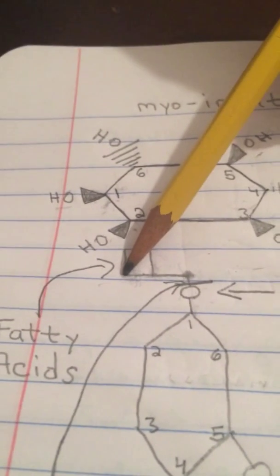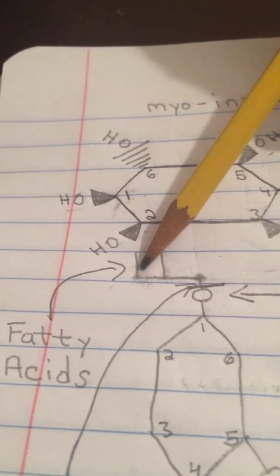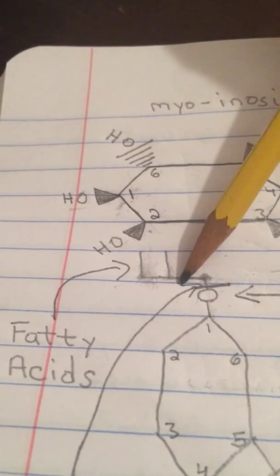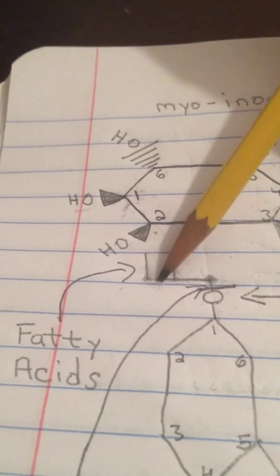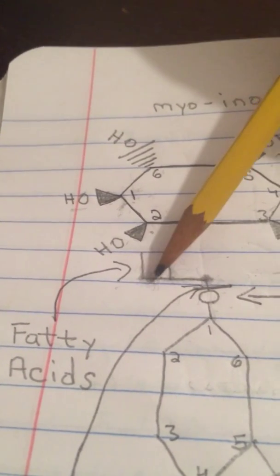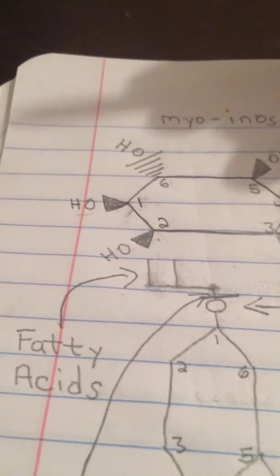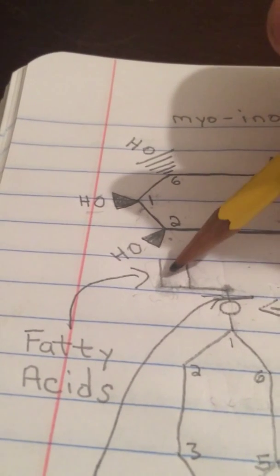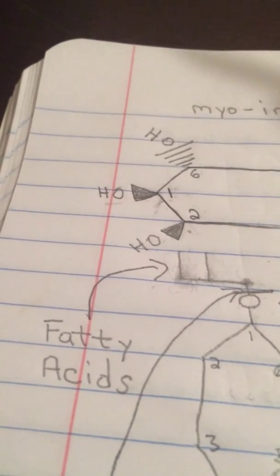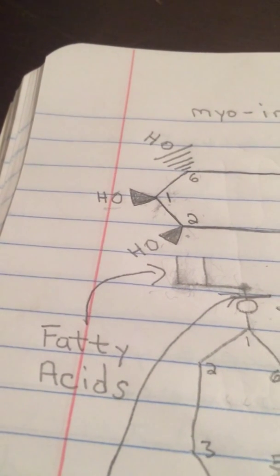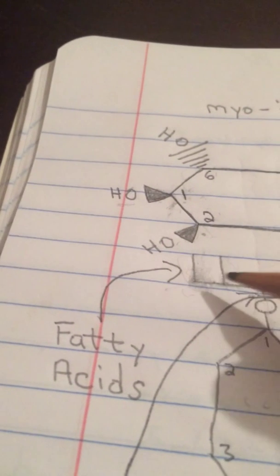Down here we have what would be like the phospholipid bilayer, and this right here would be your fatty acids, or long-chain carboxylic acids. They're not actually carboxylic acids once they bind to the glycerol molecule — they become acetyl groups, because they lose their alcohol group and are left with a carbon double-bonded to an oxygen. So they become an acetyl group once they bind to the glycerol molecule.